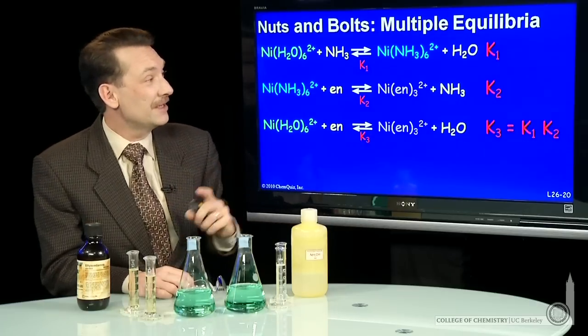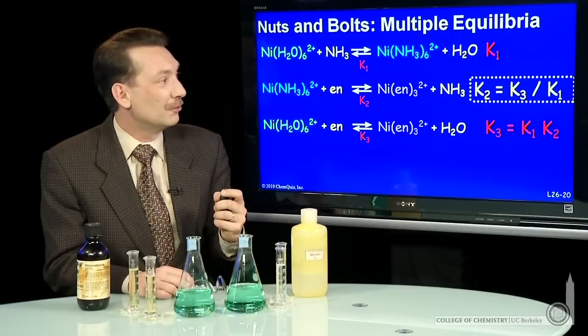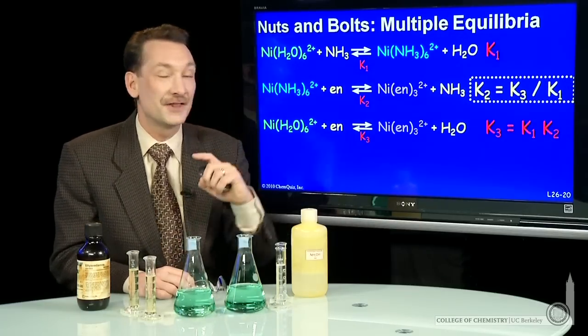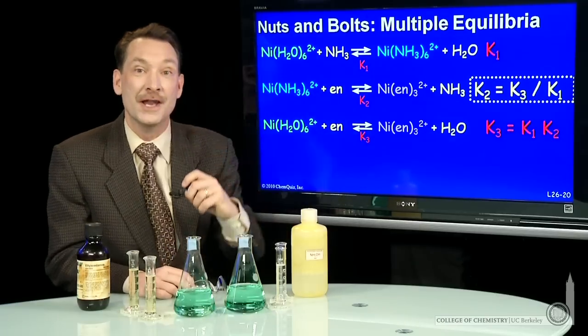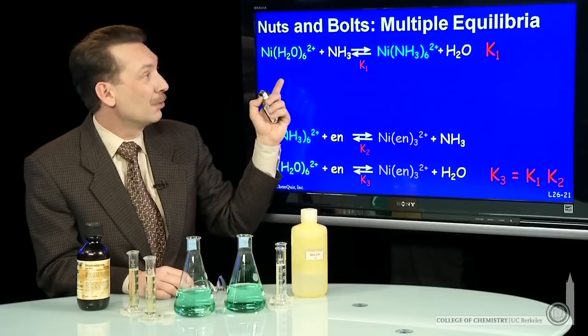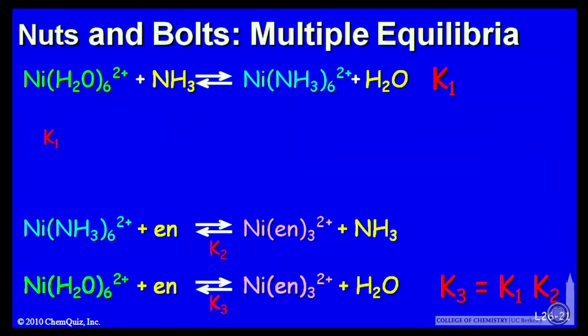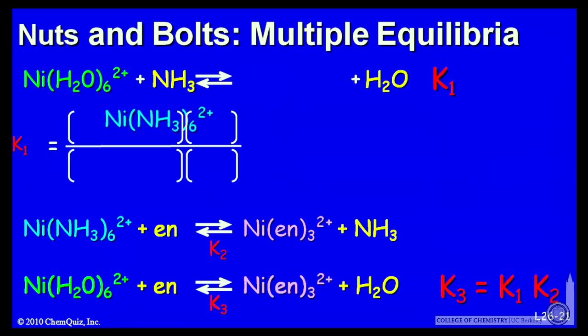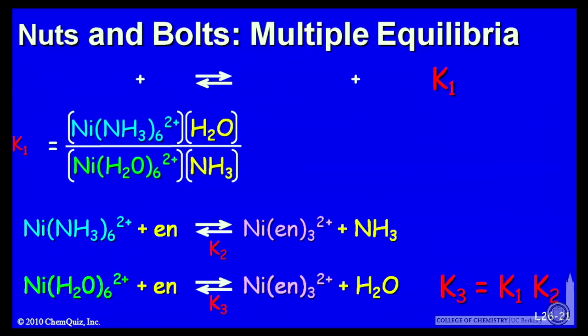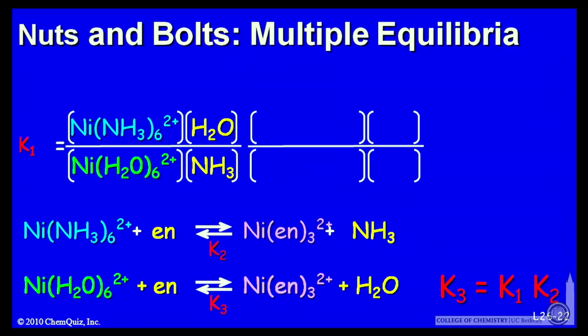We can prove that. Let's do this more explicitly. We'll show K2 is K3 over K1, or K3 is K1 times K2. We'll write out K1 explicitly as products over reactants. I'll take the products here and here, add their concentrations in the numerator, and the reactants in the denominator. Then take K2, the product of K1 and K2.